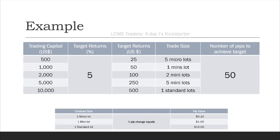With that said, your number of pips to achieve this 5% return is 50. Moving to $2,000 — if you're looking for 5% returns, that's $100 for the month. Your maximum trade size at any point in time should not be more than two mini lots, and you'd still need 50 pips to achieve that target.